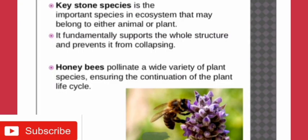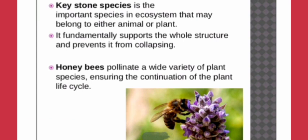Keystone species in an ecosystem may belong to either animals or plants. They fundamentally support the whole community structure and prevent it from collapsing. For example, honeybees are called keystone species because they ensure the continuation of the plant life cycle through pollination, which plays a vital role in sustaining any ecosystem — if they collapse, the whole ecosystem collapses.